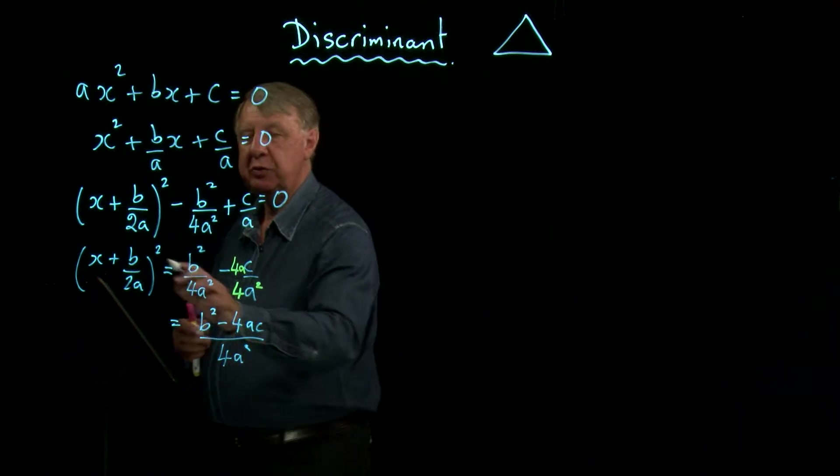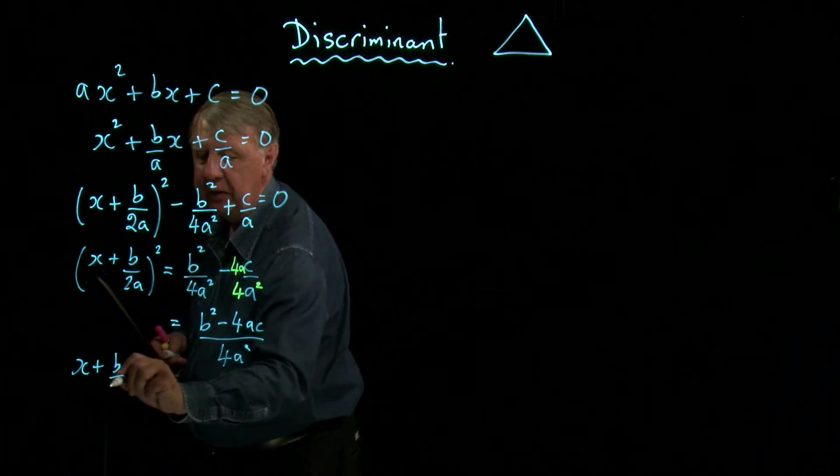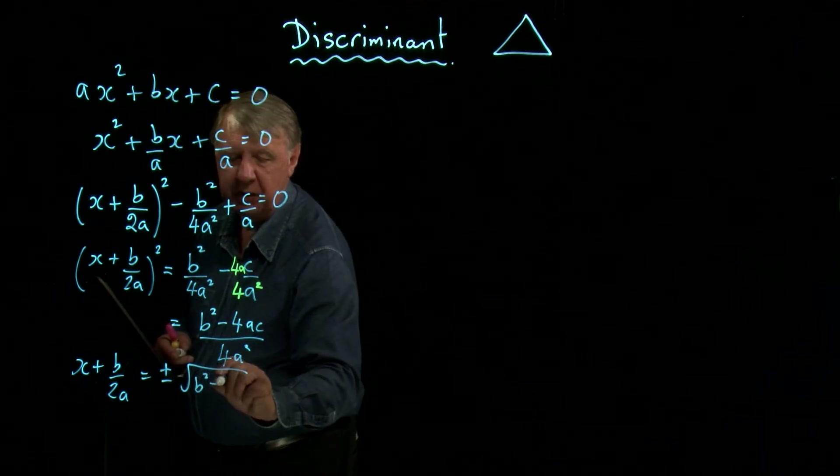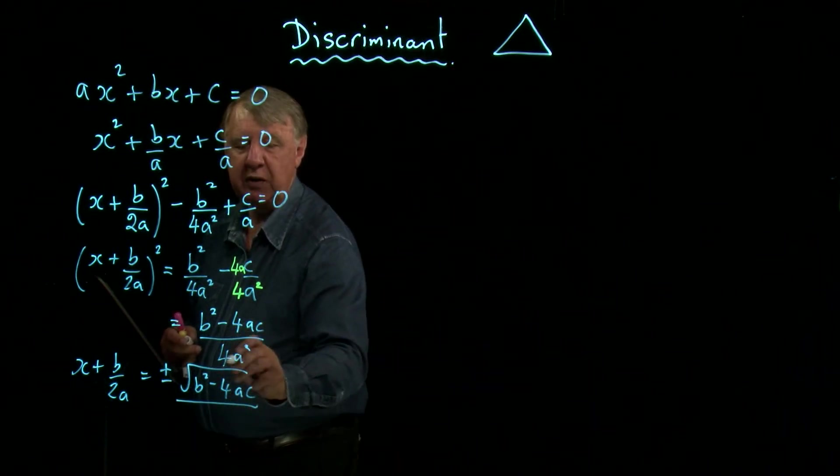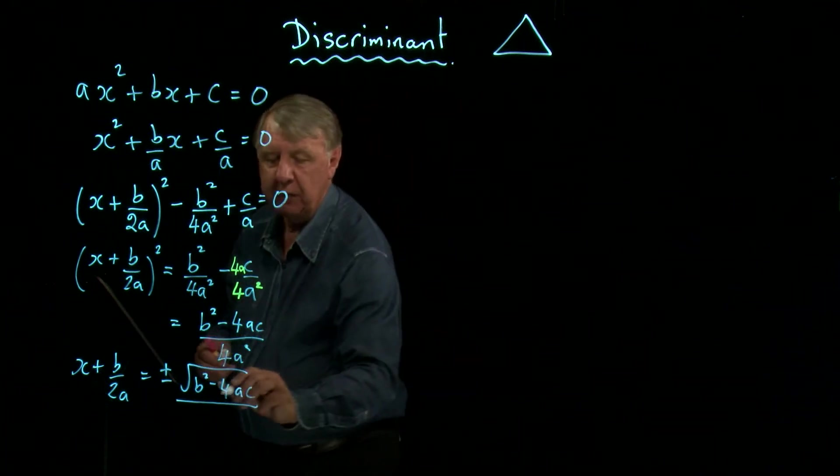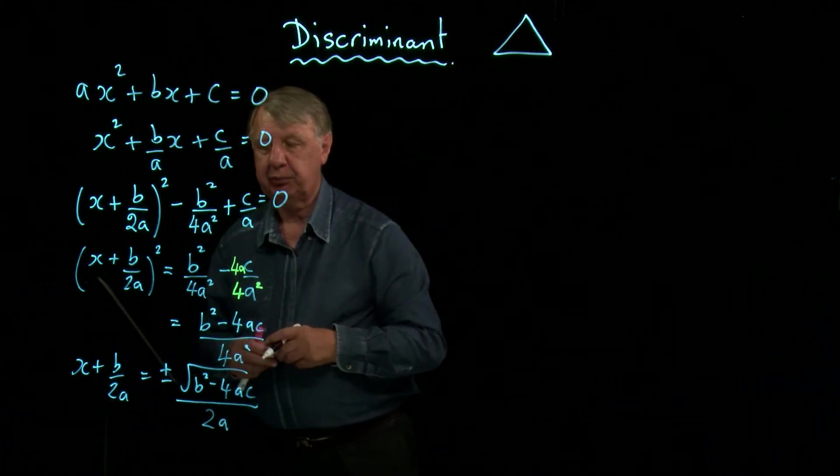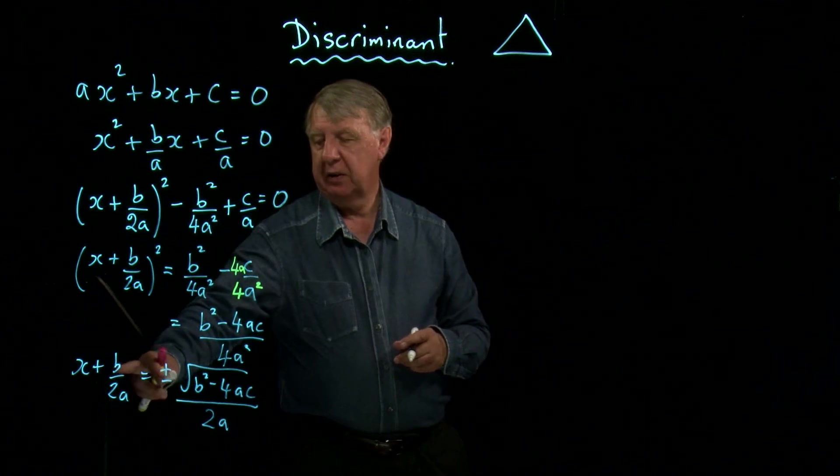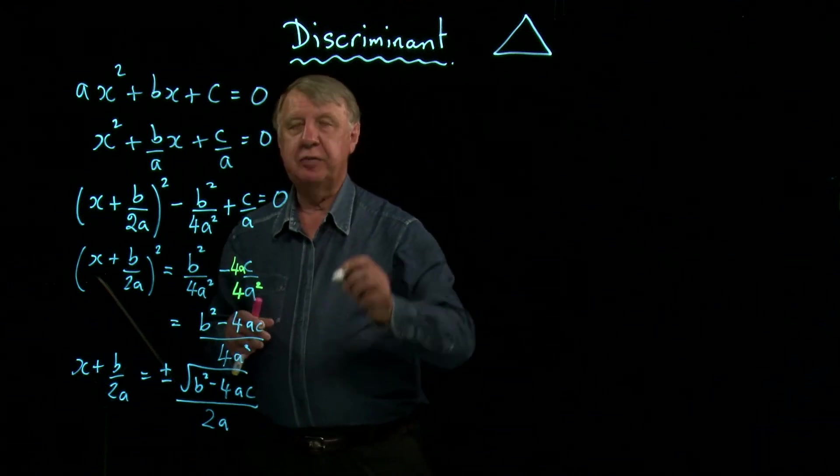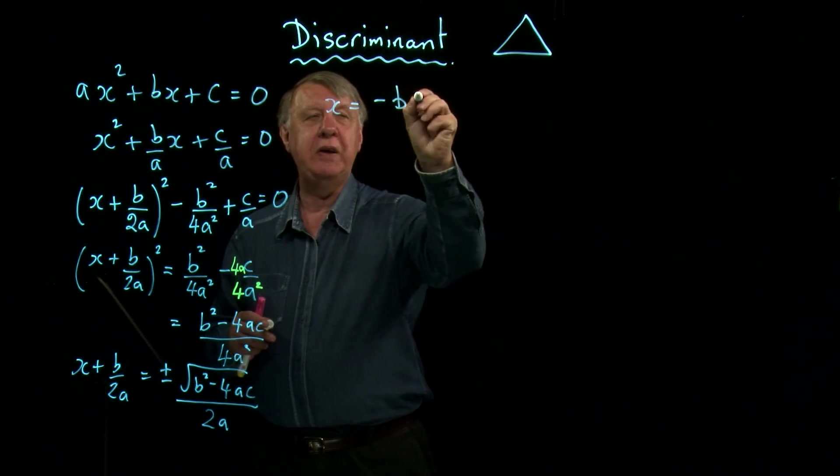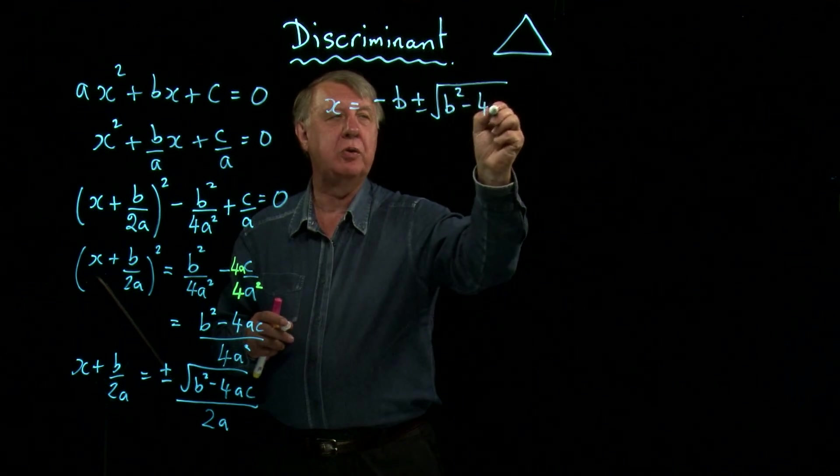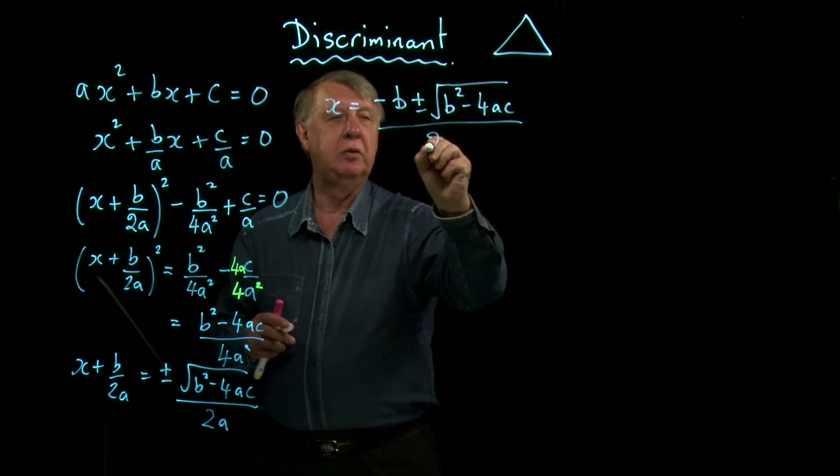Now take the square root of each side, x plus b over 2a is plus or minus the square root of b squared minus 4ac all over. Now the square root of 4a squared, what is 4a squared? Well it's 2a times 2a, so if I square root it, I get 2a. Put the b over 2a onto this side, becomes minus b over 2a. And we end up with the well-known formula that you must have seen a number of times. x equals minus b plus or minus the square root of b squared minus 4ac all over 2a.